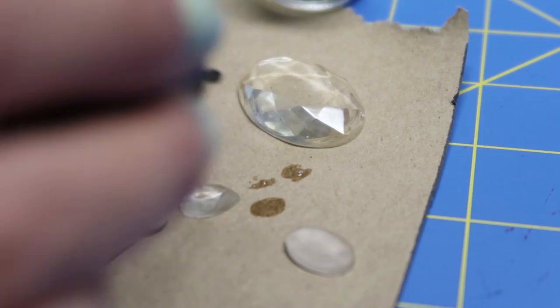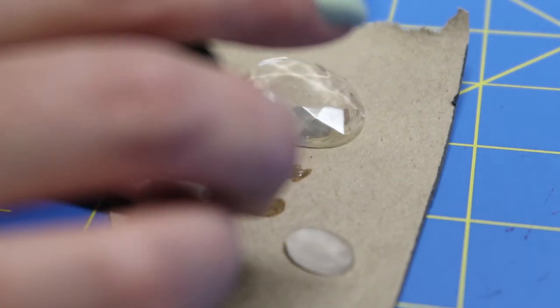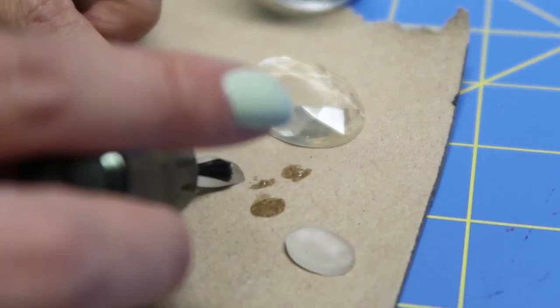If your gems are matte, you can either mix up some more resin and carefully coat them, or just use some clear nail polish like I'm using here.